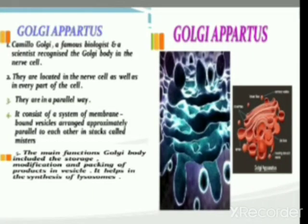Golgi apparatus: Camilo Golgi, a famous biologist and scientist, recognized the Golgi body in the nerve cell. Golgi apparatus are a system of membrane-bound vesicles arranged approximately parallel to each other in stacks called cisterns. They are located near the nucleus in animal cells, and in plant cells they are freely distributed.